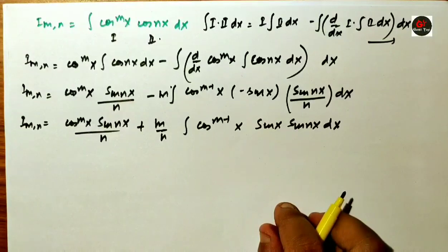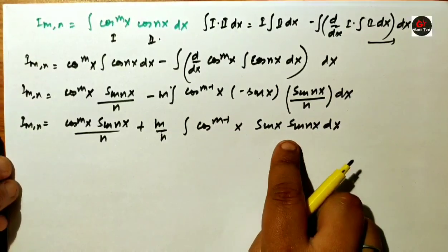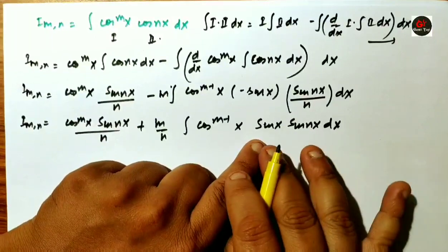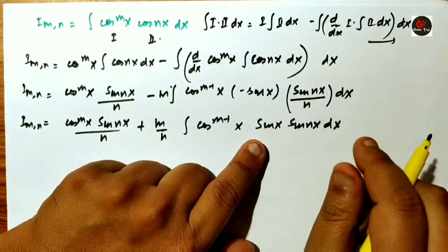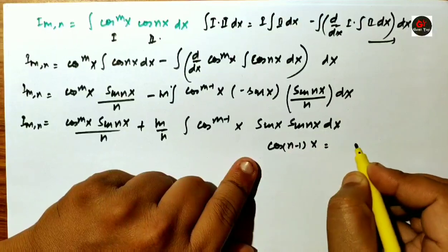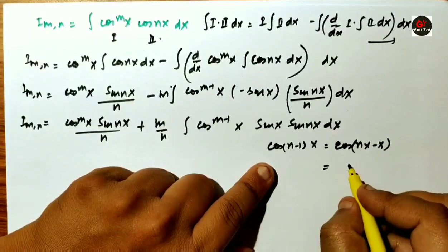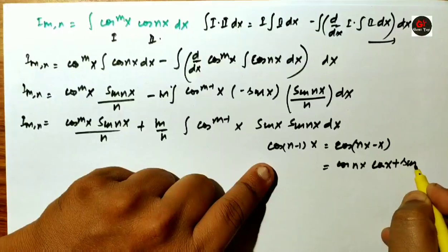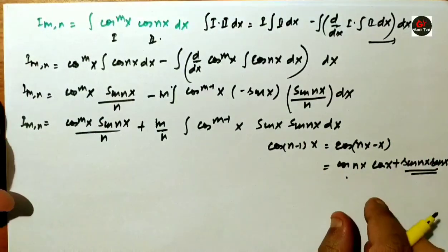Now I will use a trigonometric product formula to handle the sin(x)·sin(nx) term. We need the identity for sin(a)·sin(b). We apply the cos(n-1)x formula. cos(n-1)x = cos(nx - x) = cos(nx)·cos(x) + sin(nx)·sin(x). There is a specific reason for choosing this identity which we will discuss later. So we will substitute this value into our expression.